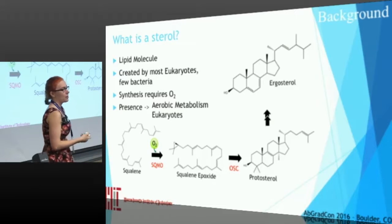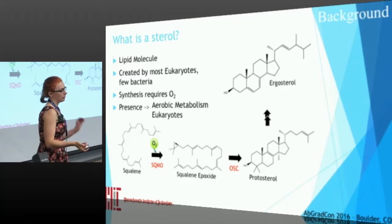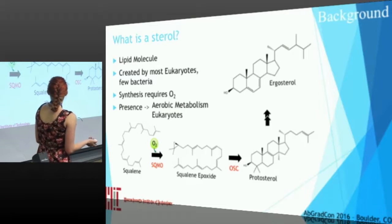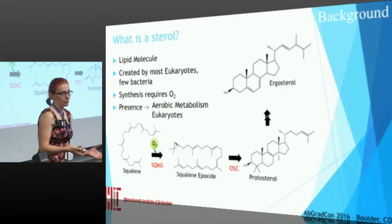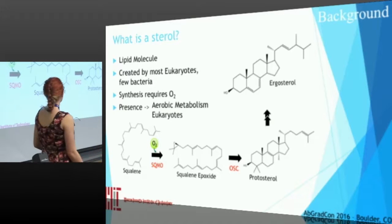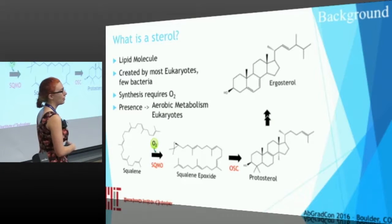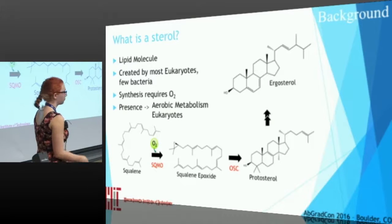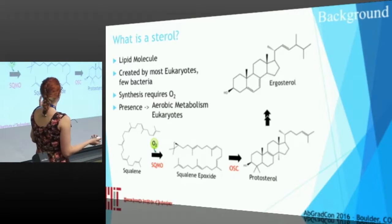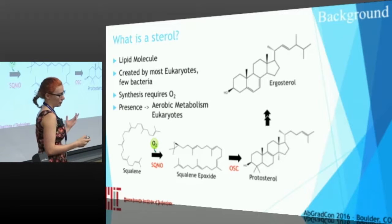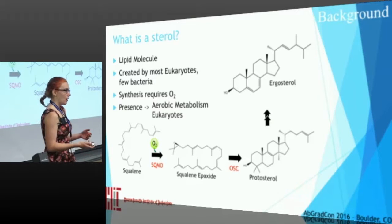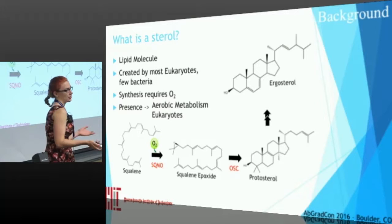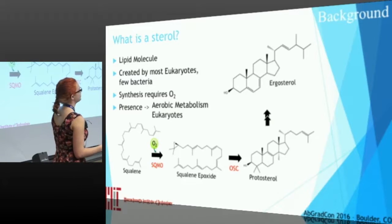Sterols in general are created by most eukaryote lineages and only a very small number of bacteria. As such, they're usually indicative of the presence of eukaryotes. Furthermore, sterols require oxygen to be synthesized in the first step, and also further downstream depending on the specific sterol being made. So the presence of sterols is indicative of aerobic metabolism and of eukaryotes, making dating when sterol synthesis first evolved interesting for understanding early life.